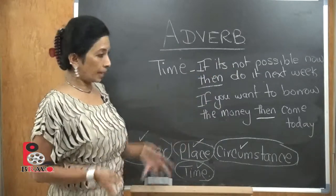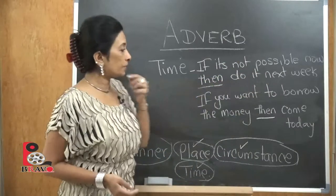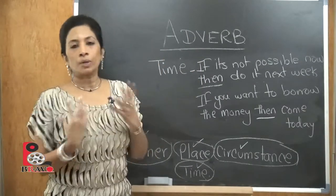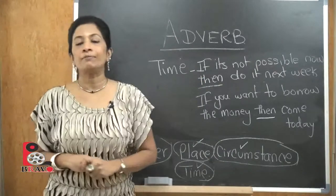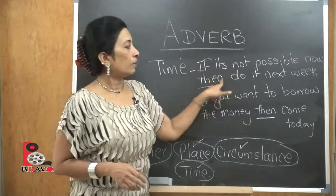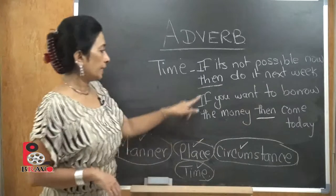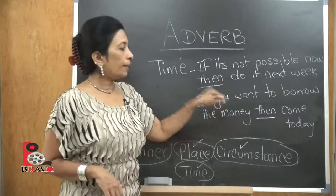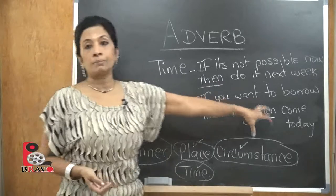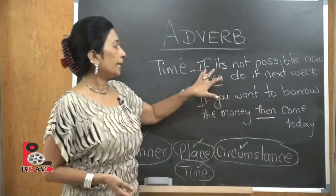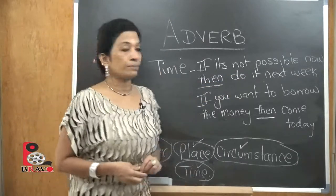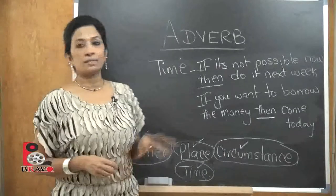The last example is time. 'If it is not possible now, then do it next week' — 'next week' is your time scale and 'then' is your adverb. These are exceptional adverbs that don't finish with '-ly,' but they connect to say when to finish the task. The second example: 'If you want to borrow the money, then come today' — 'today' is the time adverb specifically saying when.